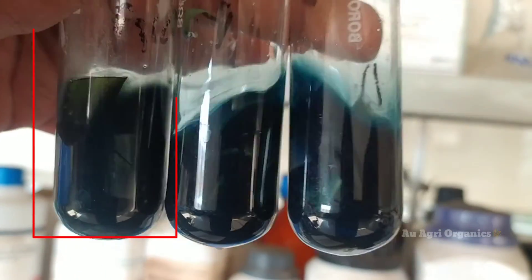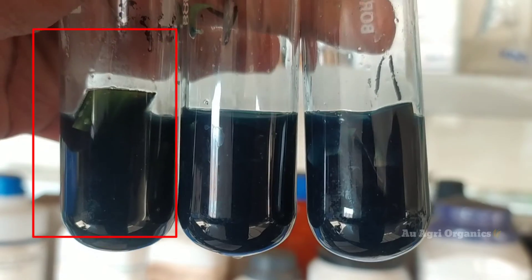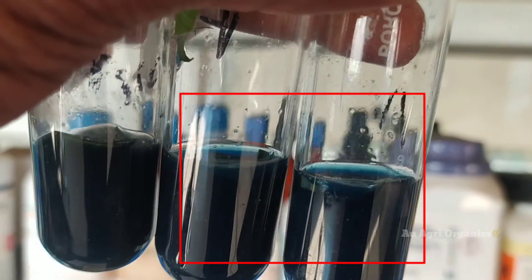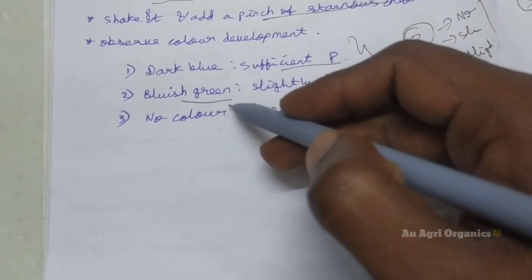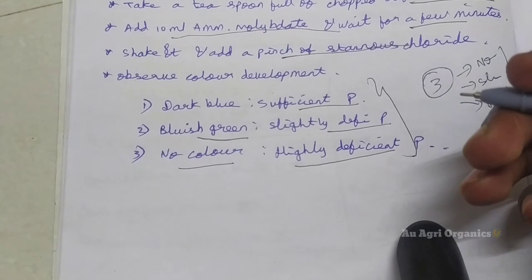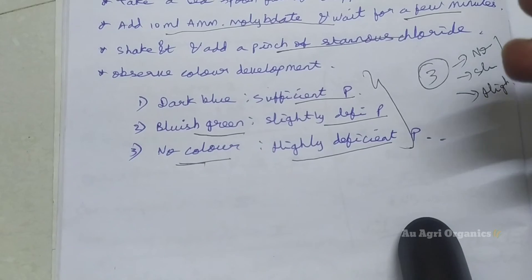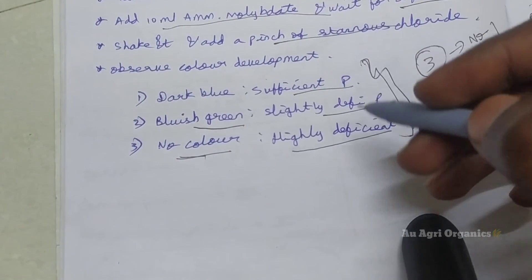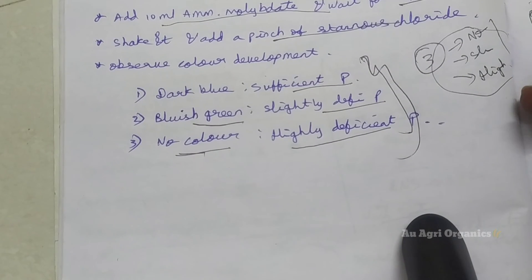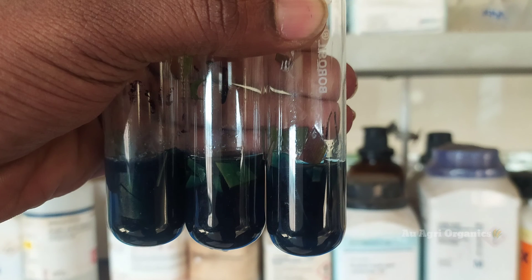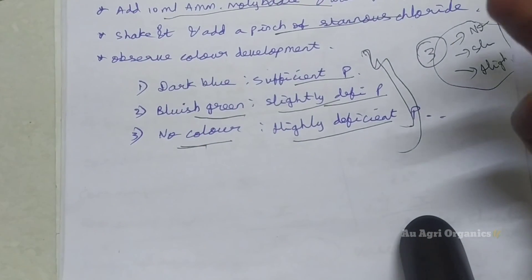There are 3 types of color development to observe. If the solution appears dark blue, that plant is sufficient in phosphorus. If the color development is blue-green, there is a slight deficiency of phosphorus and uptake has been reduced. If there is no color development, then the plant is highly deficient in phosphorus, meaning the plant has not taken up any phosphorus from the soil. As I tested these 3 types of deficiency symptoms, there is slight color development, so the soil is slightly deficient in phosphorus, and hence additional phosphorus was applied.